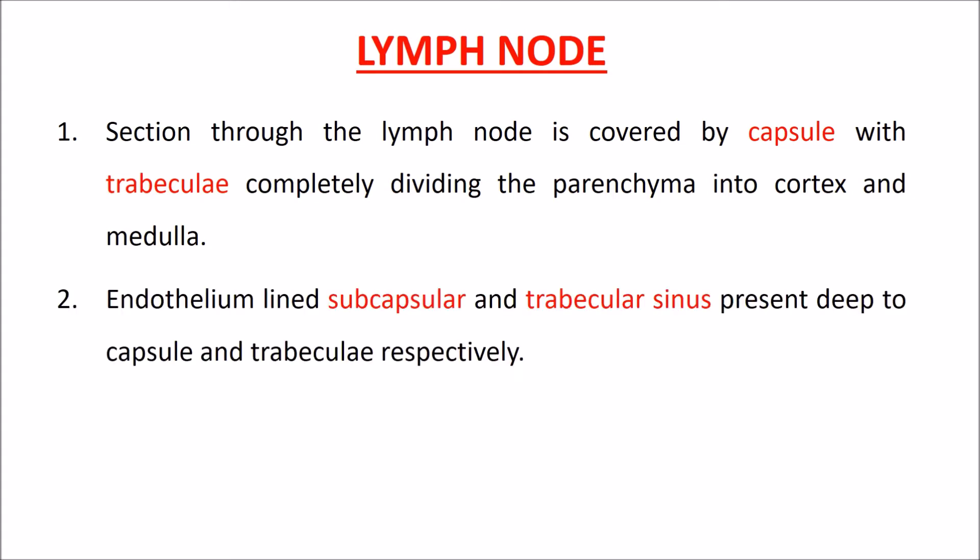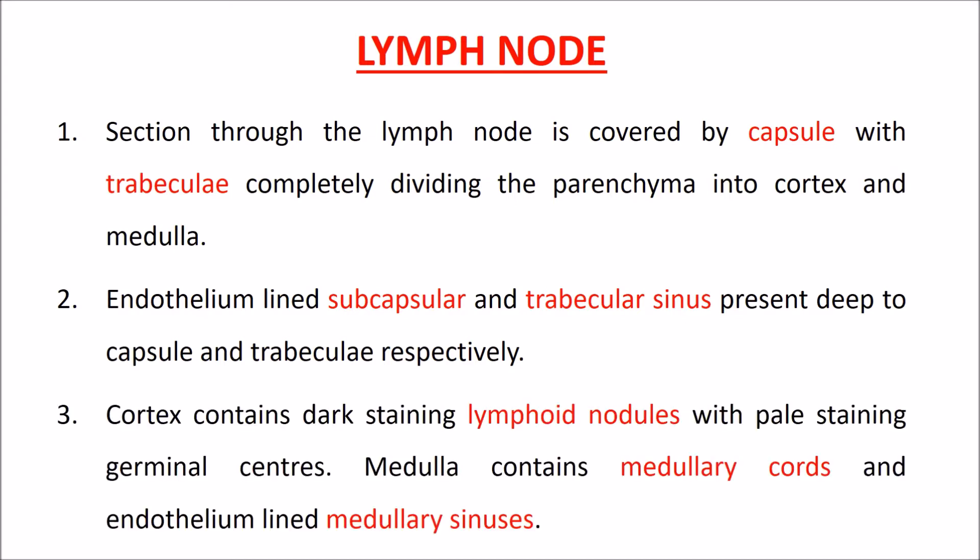Endothelium-lined subcapsular and trabecular sinuses are present deep to the capsule and trabeculae respectively. The cortex contains dark-staining lymphoid nodules with pale-staining germinal centers.